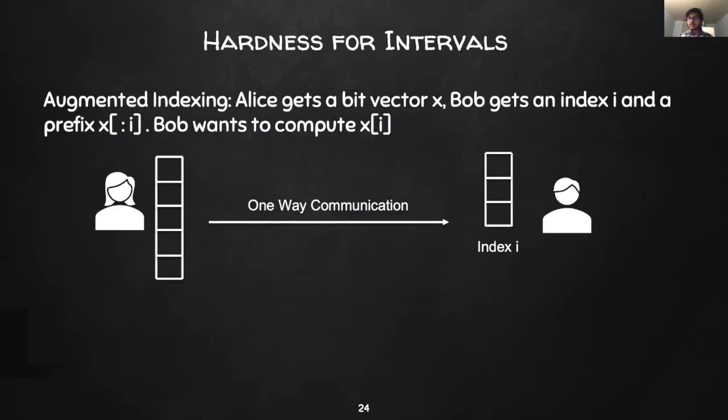Next, I'll discuss the techniques we used to prove our hardness of approximation results. It follows from a straightforward reduction from the augmented indexing problem. Recall, the augmented indexing is a communication problem between two players, Alice and Bob. Alice receives as input an n-dimensional bit vector x and Bob receives as input an index i along with the prefix of Alice's input vector x up to the i-th bit.